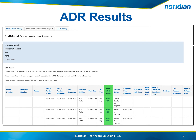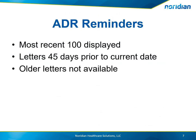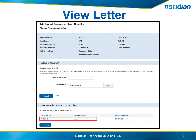To view the ADR letter and to upload supporting documentation, choose the View ADR link. The portal will display the most recent 100 claims that have had an ADR sent. Due to limitations, letters may only be viewed 45 days prior to the current date. To view the original ADR letter that Neridian sent, choose the document ID under the documentation attached to this claim table for the document name, letter. This letter will contain the claim information and a description of the documentation needed, and would be a copy of the letter that Neridian would send in the mail.